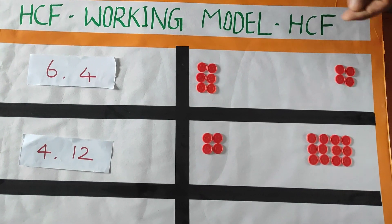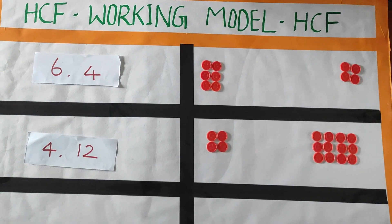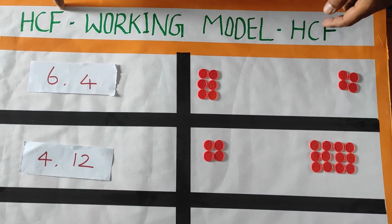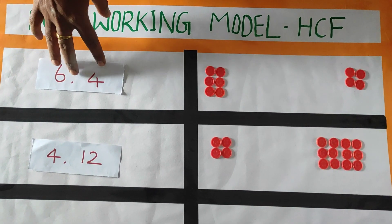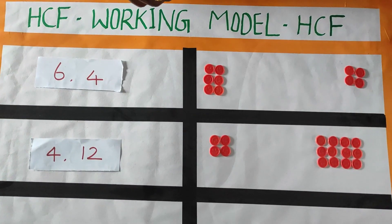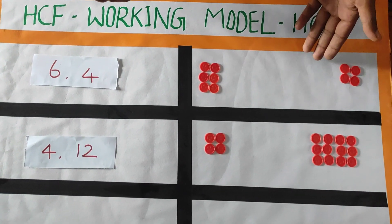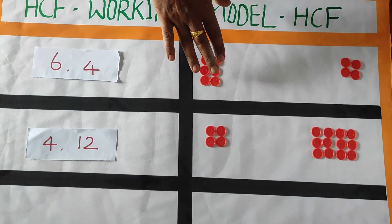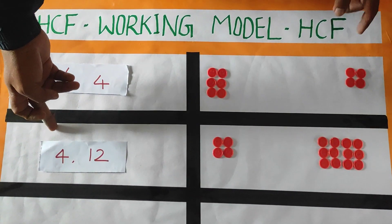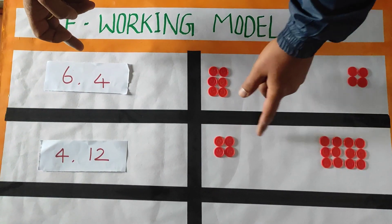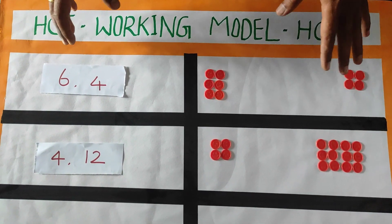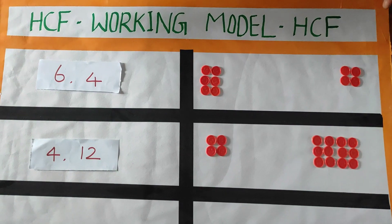Hello everyone. Today in this video I am going to explain how to find the HCF through a working model. We have a few examples here: 6 and 4, and the second one is 4 and 12. We have marbles here — 6 marbles and 4 marbles for the first example, and 4 marbles and 12 marbles for the second. Through this activity we are going to learn how to find out the HCF.